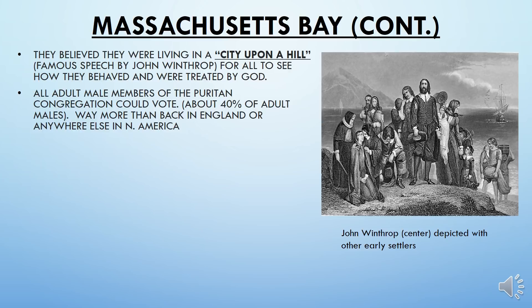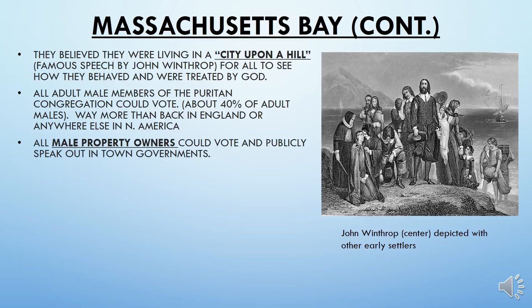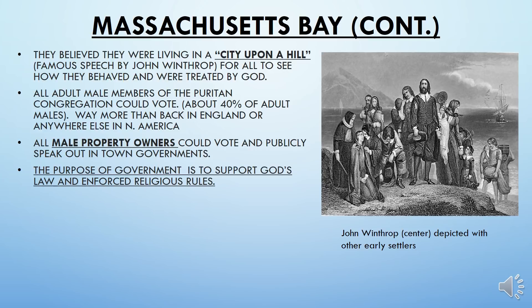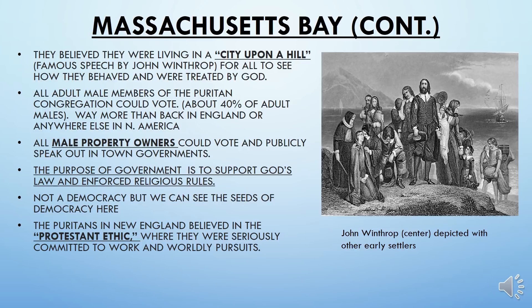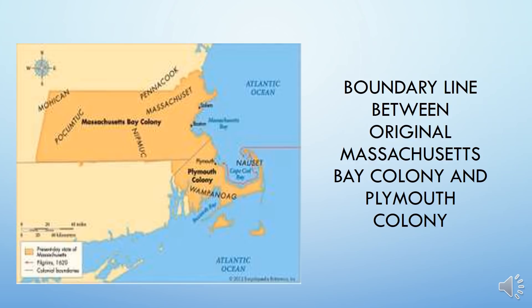Some interesting notes about Massachusetts Bay: all adult male members of the Puritan congregation could vote — about 40% of adult males. It's not perfect democracy, but far more voters than back in England or anywhere else in North America. All male property owners could vote and publicly speak out in town government. The purpose of government to them was to support God's law and enforce religious rules — not a democracy, but we can see the seeds of democracy here. The Puritans also believed strongly in a Protestant work ethic and were very committed to their work and worldly pursuits.